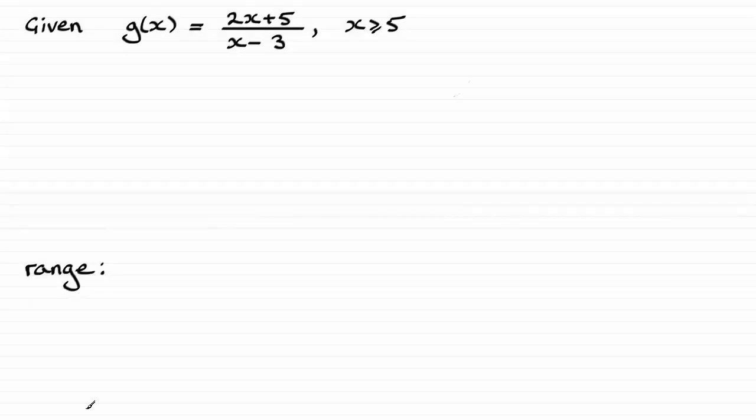Now for this part of the question, we're given g(x) = (2x+5)/(x-3), where x is greater than or equal to 5, and asked to find the range.